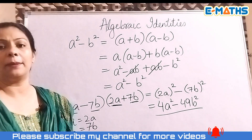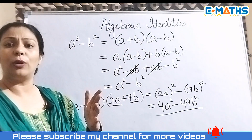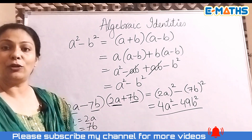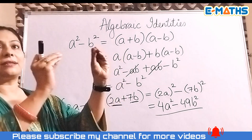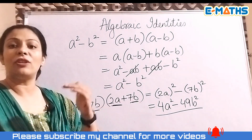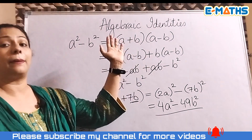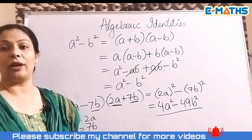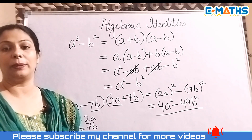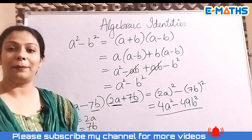It's very important to memorize these identities rather than re-deriving them each time. When you see (2a+3b)², simply recall the identity, substitute the values, and find the answer — it's much easier than multiplying out binomials. I hope you liked the video. Do subscribe and share with your friends. Have a good day, bye bye!